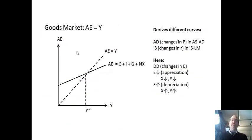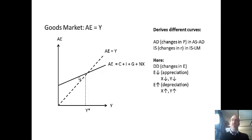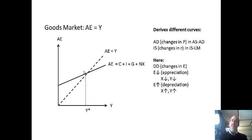Here we have the Keynesian Cross — aggregate expenditure. Notice the exchange rate is not drawn here; we're going to introduce E on a different graph. This is total spending for a country's products: domestic consumption, business investment, government spending, and net exports, which includes exports to other countries as well as imports. Equilibrium is where aggregate expenditure equals income. This is where actual spending equals the income line, and that gives us equilibrium GDP.